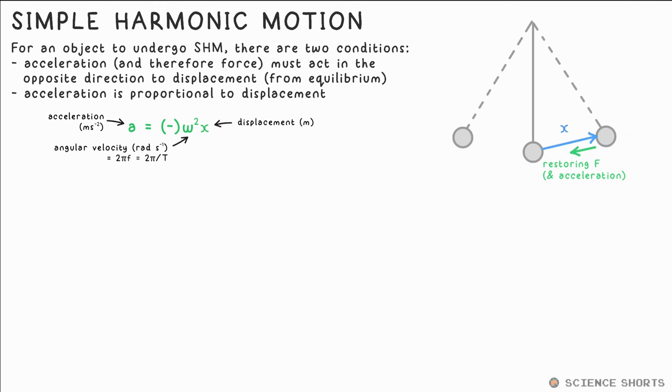As we know from circular motion, omega is equal to 2πf, or 2π over t, and x is the displacement from equilibrium in metres. If we use calculus in A-level physics, we derive this from the other equation you'll see in a minute, but as we don't, we can just use it as our jumping off point for SHM.